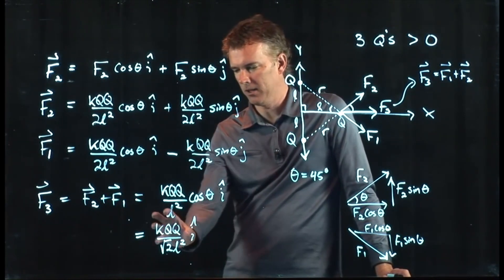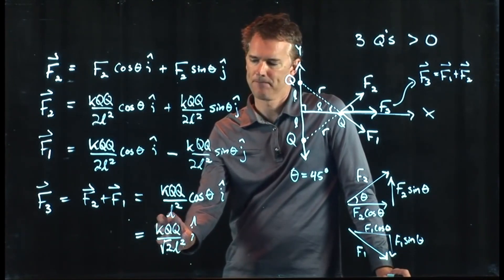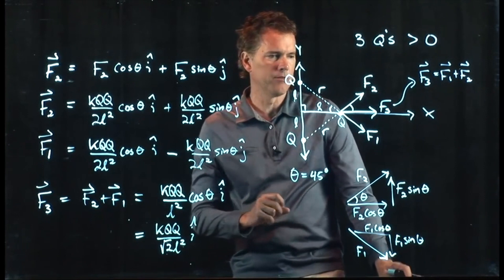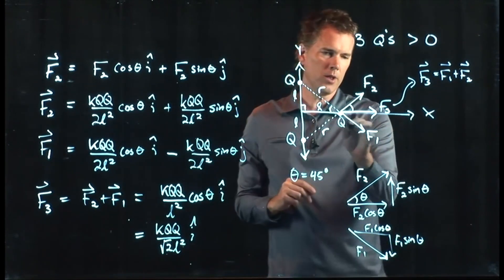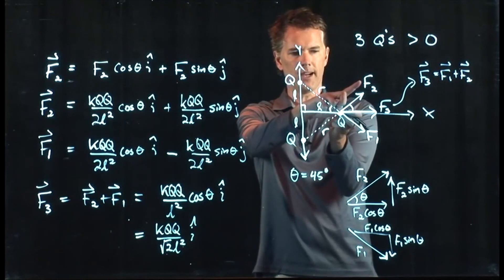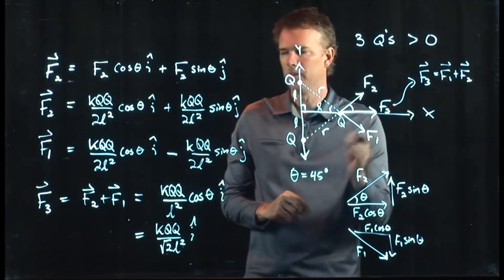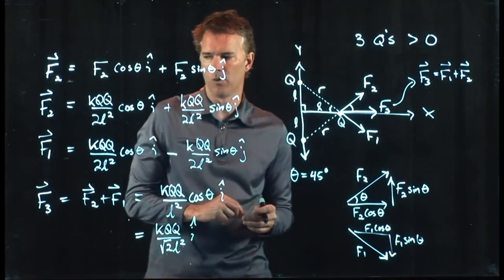If you want to calculate the magnitude of it, it's just that stuff out in front. So you kind of knew the answer, right? You knew that F3 had to be pointing to the right because those other two factors were going to cancel in the vertical direction. And they would contribute in the X direction, in the horizontal direction.